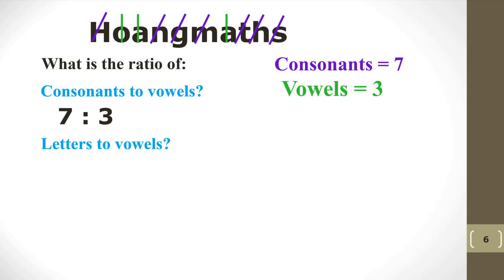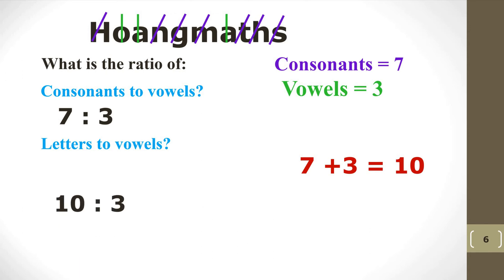What is the ratio of letters to vowels? There are 7 consonants and 3 vowels, so adding them up gives 10 letters total in 'Hoang Maths'. Therefore the ratio of letters to vowels is 10 to 3.